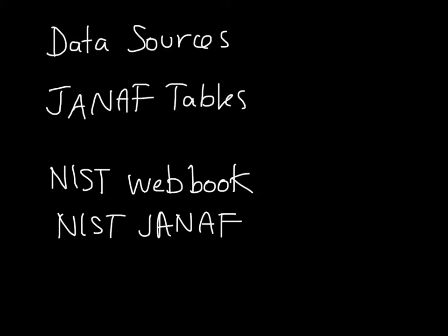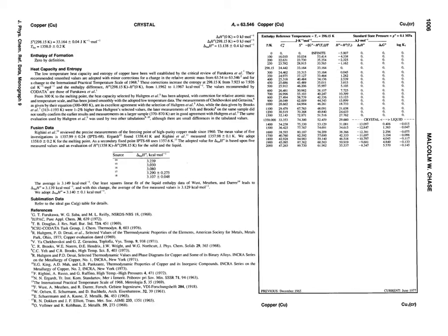Let's look at what the JANF tables actually look like — what you'll find if you look in the book. The same information comes through the web interface as well. This is the A-page from the JANF tables for copper. The compound name is always in the top left. The state is given here — it says 'crystal' for solid, meaning crystalline.